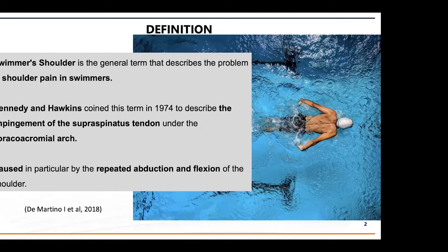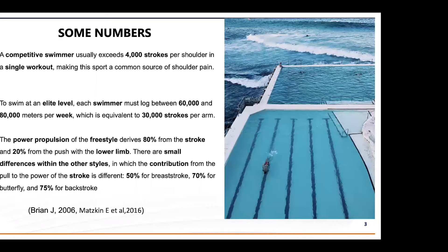About some numbers: competitive swimmers usually exceed 4,000 strokes per shoulder in a single workout — a very important quantity. Each swimmer must log between 60,000 and 80,000 meters per week. It's important to understand that in freestyle, 80% of the power comes from the stroke and 20% from the push with the lower limb. Other styles differ: for example, breast stroke is 50%, butterfly 70%, and backstroke 75% stroke contribution.